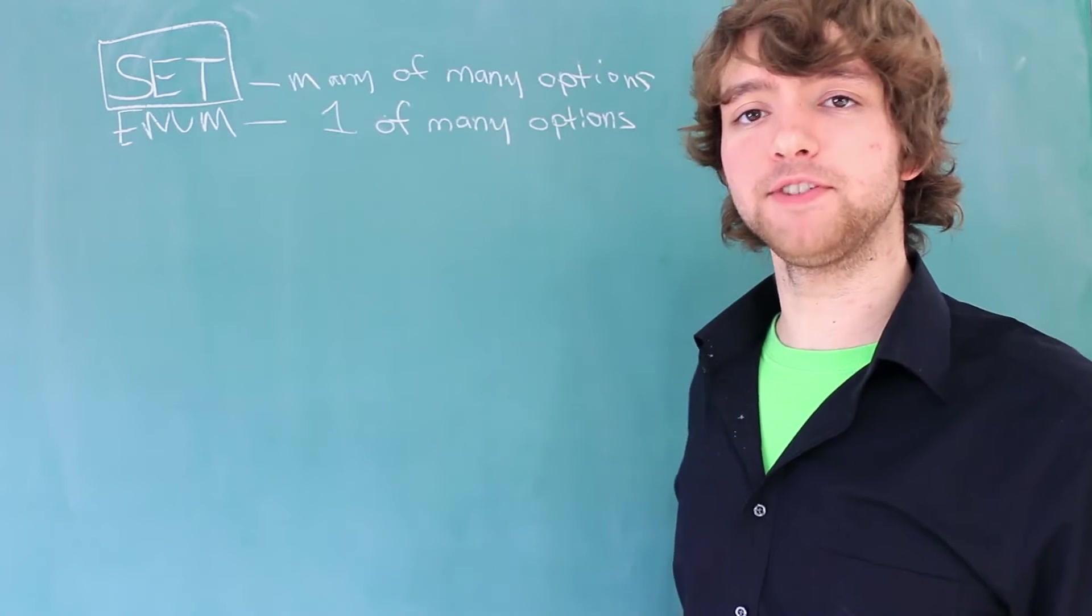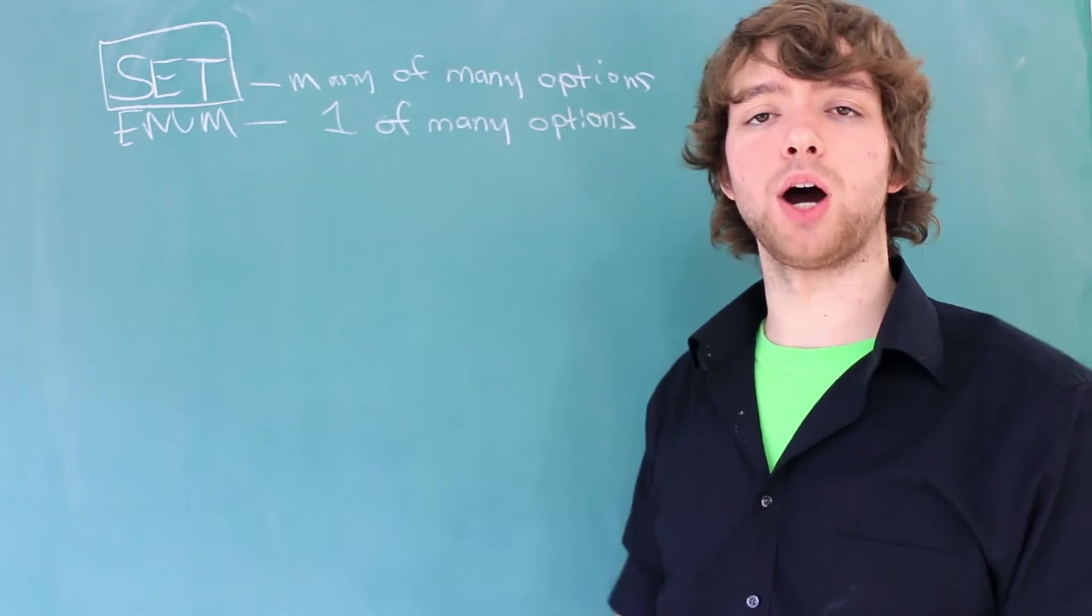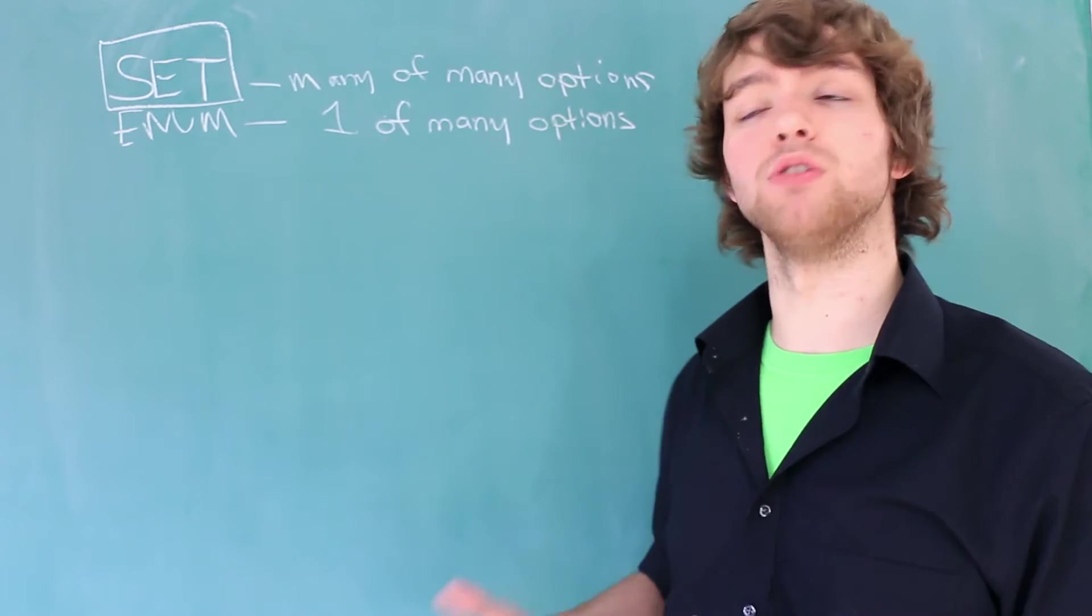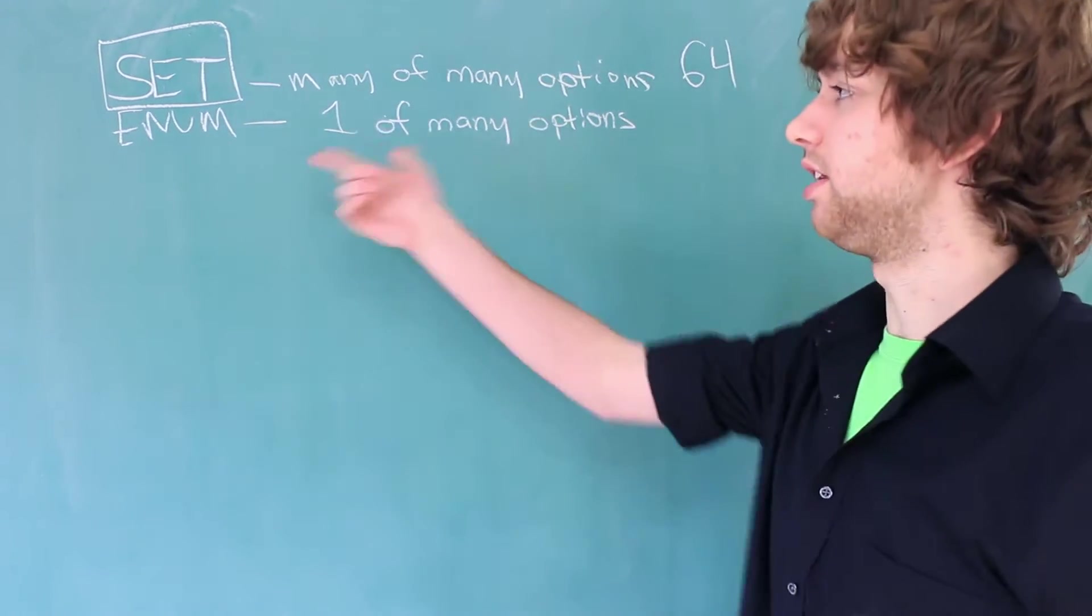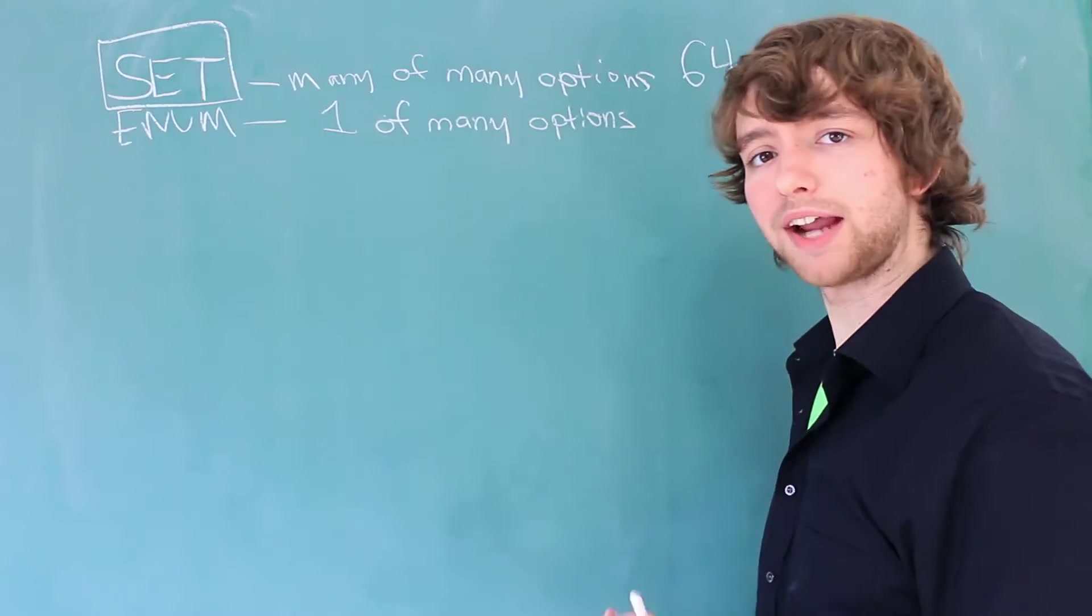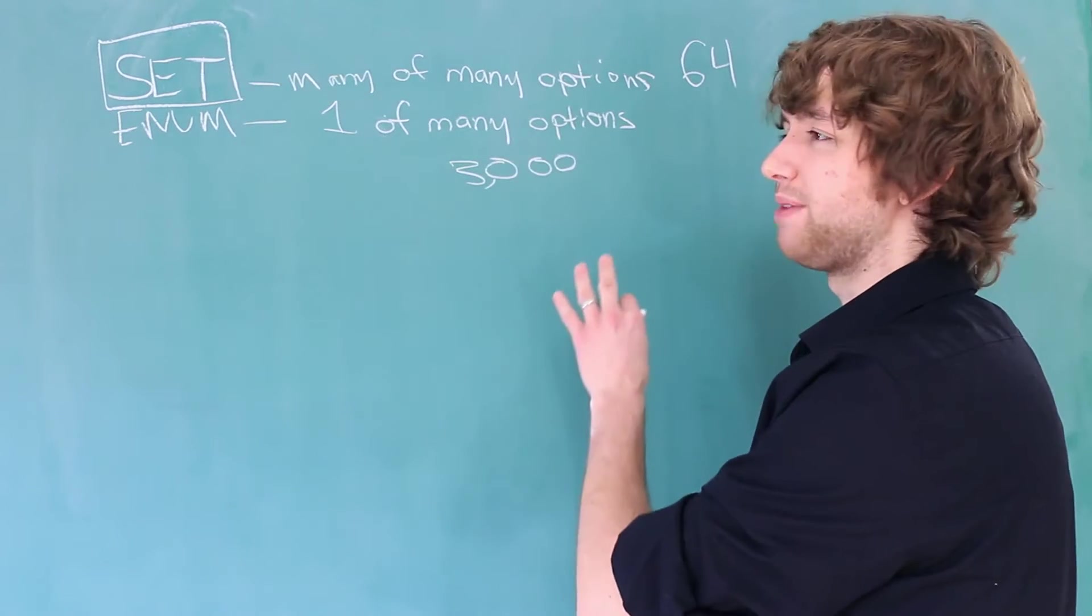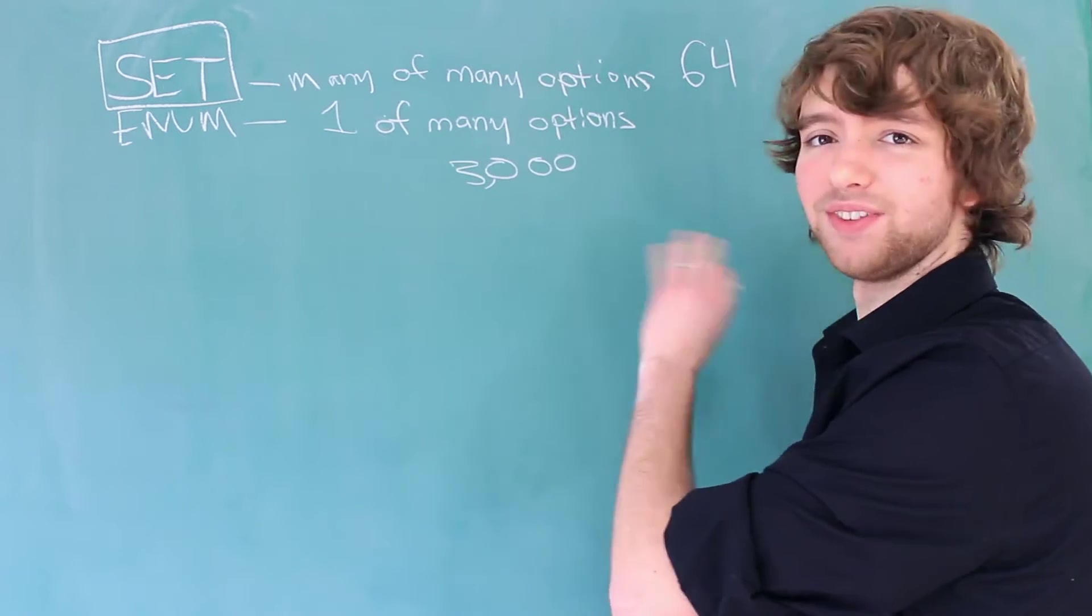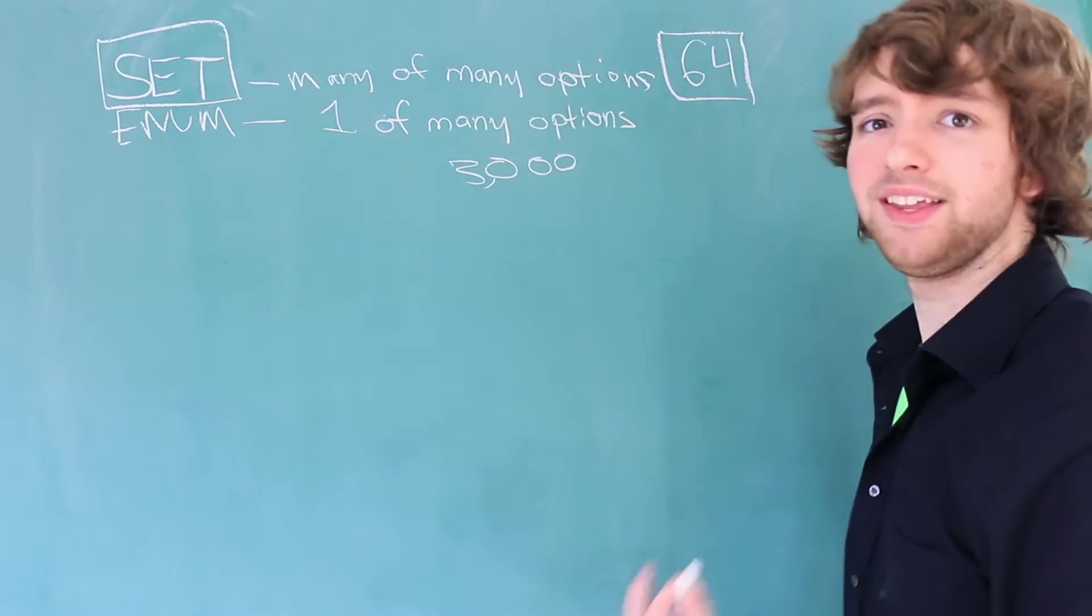One of the primary differences between set and enum is that with set, the number of available options you're allowed to have is much lower. In fact, you're only allowed to have 64, whereas with enum, you can have thousands. Practically, you should never have more than 3,000. But even with that many options, that's a crap ton of options. You might not even need that many. 64, on the other hand, is a pretty small number. You might hit that.